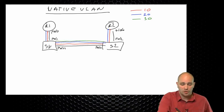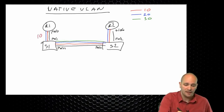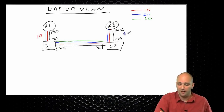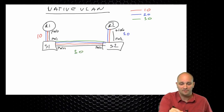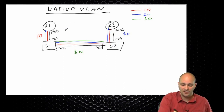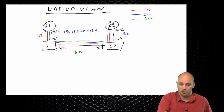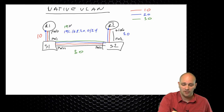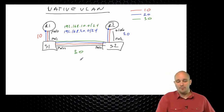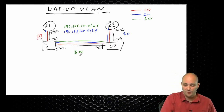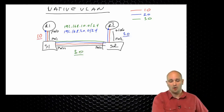Between R1 and Switch 1 I want VLAN 10 to be native, and between R2 and Switch 2 I want VLAN 20 to be native. I'm going to have IP addresses on sub-interfaces configured in VLAN 20 as 192.168.20.0/24 (.1 and .2), and on VLAN 10 I will have 192.168.10.0/24 (.1 and .2). I'm using VLAN 10 as native on the R1 side, VLAN 30 as native on the trunk between Switch 1 and Switch 2, and VLAN 20 as native between R2 and Switch 2.